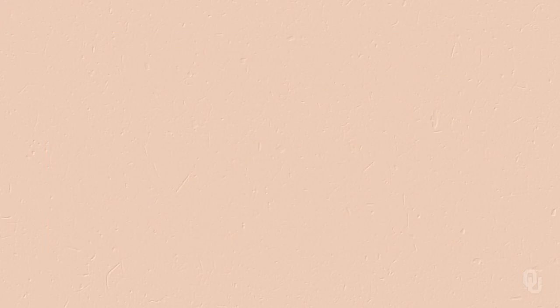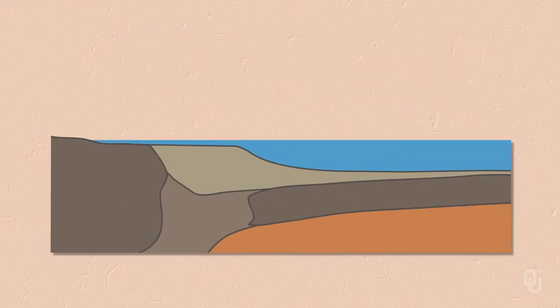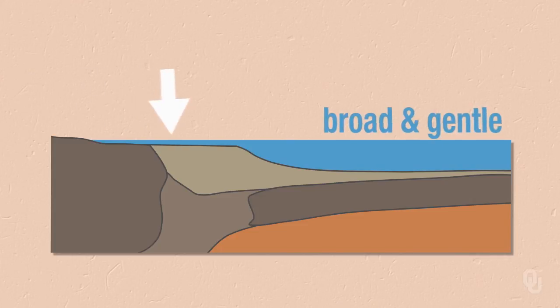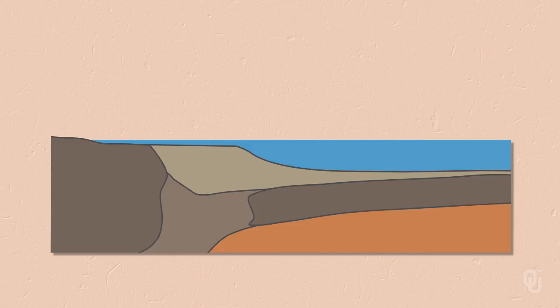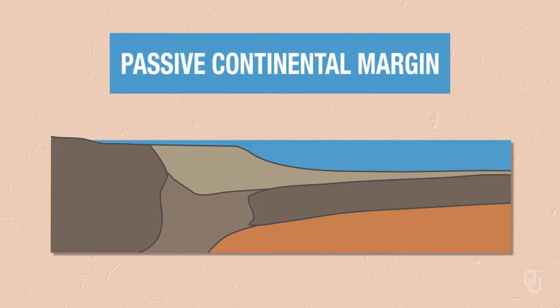On the other hand, some shelves are very broad and gentle, like on the east coast of the United States. These are called passive continental margins — there's no subduction zone there.